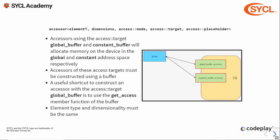Let's look more closely at the access targets. Accessors with the access targets global buffer or constant buffer will allocate memory and copy to the global and constant memory spaces respectively. Accessors with these access targets must be constructed from a buffer. A useful shortcut for constructing a global or constant buffer accessor is provided by the get_access member function of the buffer class. The element type and dimensionality must always be the same as the buffer.